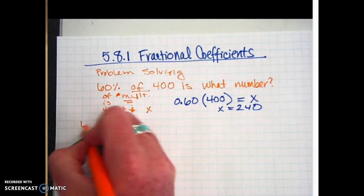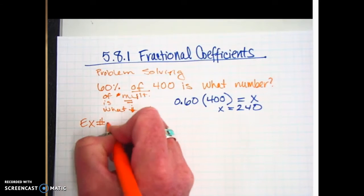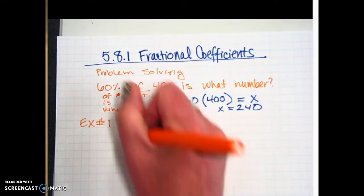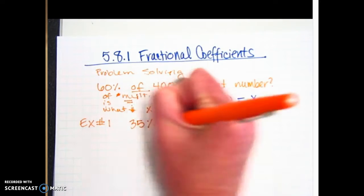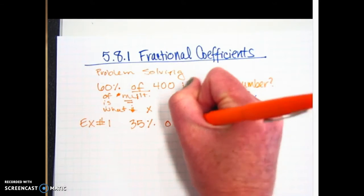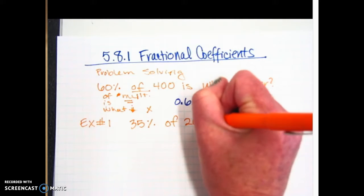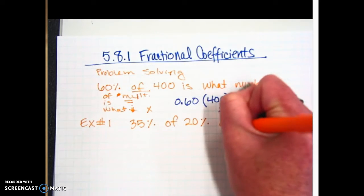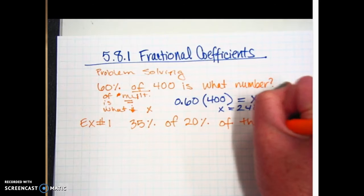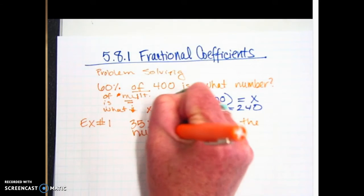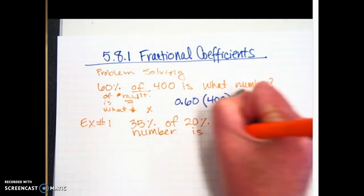All right, so let's try one more like that, and then we'll work our way into some harder stuff. Example number one, we're going to say 35% of 20% of the number is 24.